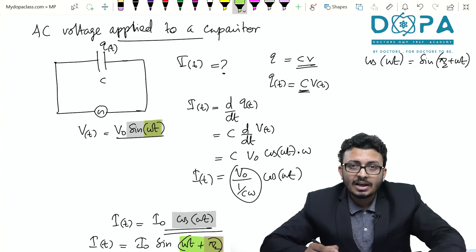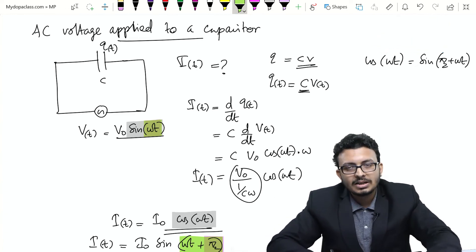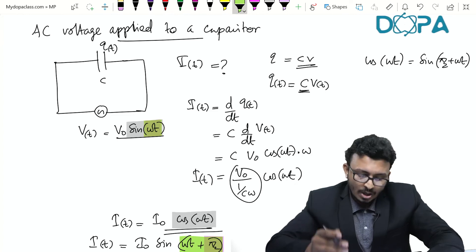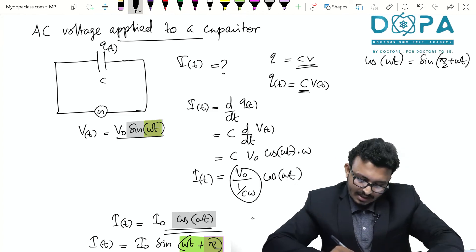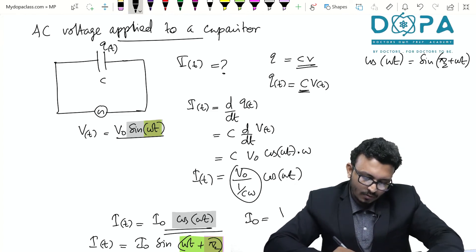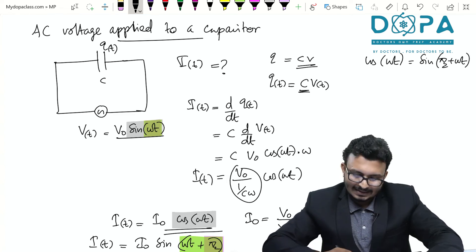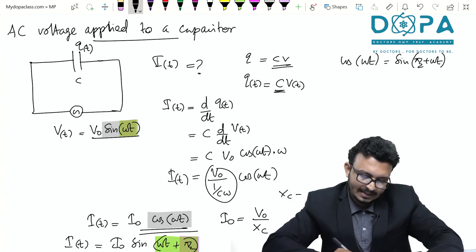That means you can say the current in capacitor leading the voltage across the capacitor by π/2, and the peak value of the current I0 is equal to V0 by the capacitive reactance XC where XC is nothing but 1/Cω.